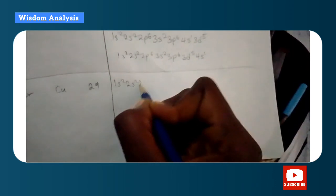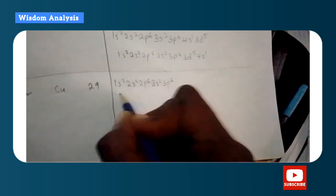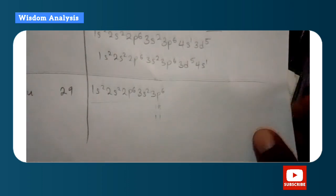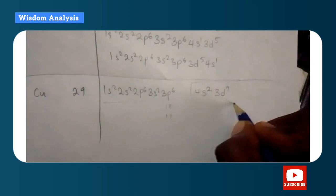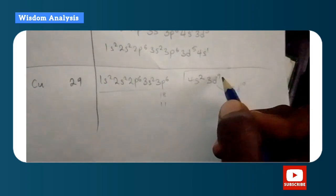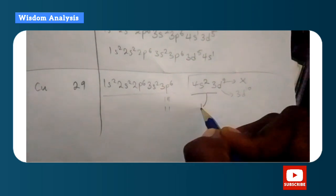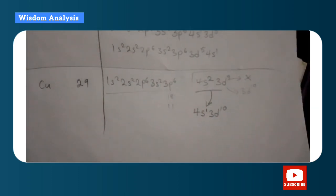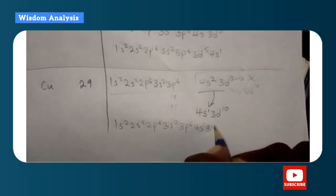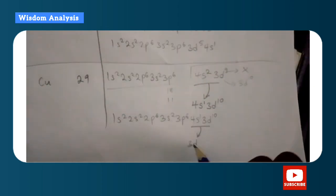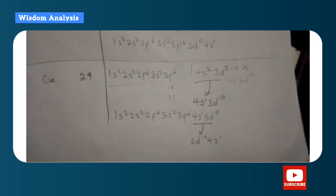For copper (Z=29): up to 3p⁶ we have 18, needing 11 more. Writing 4s², 3d⁹ might seem right, but since a fully-filled d shell is more stable, one electron is promoted from 4s to 3d, giving 4s¹, 3d¹⁰. This can also be written as 3d¹⁰, 4s¹.